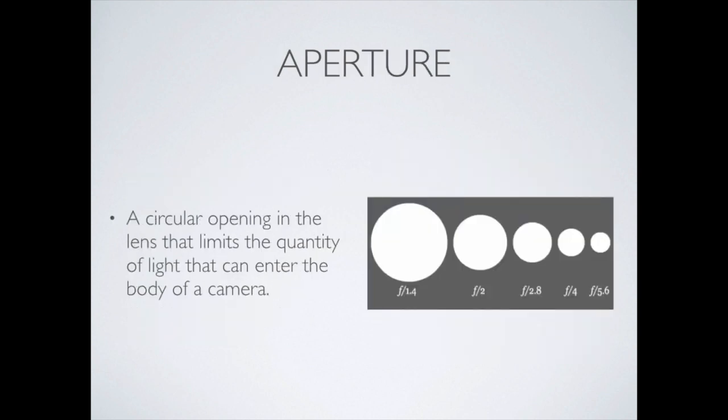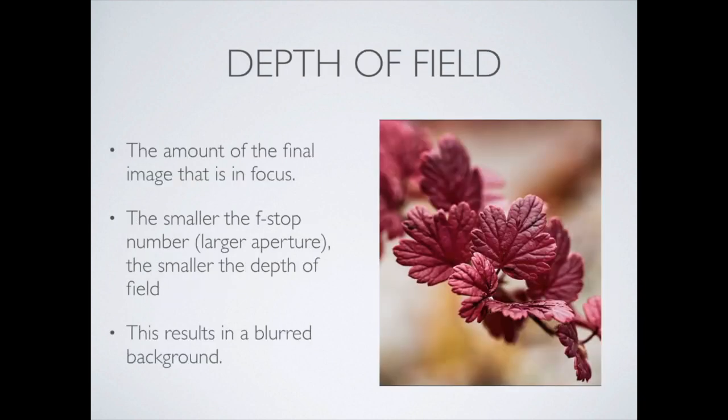Aperture is the circular opening in the lens that lets the light into the camera body, or into that lightproof box. This is the same whether you're on a digital SLR big camera like a wedding photographer, or whether you have your phone out taking a picture. The concept is still the same — this is the amount of light that can get into the camera based on how open that lens is.